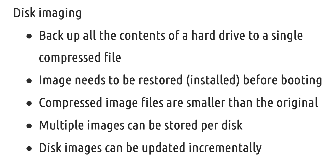When you're creating a disk image, you are backing up all the contents — your data — to a single compressed file, and then the image needs to be restored back onto the new drive after you do a fresh installation of the operating system. Because the files are compressed, they take up less space on the hard drive. Also, you can store multiple images on that disk versus cloning, where you can only have one clone per disk. You can create multiple backups with different dates and times, which is much better than cloning.